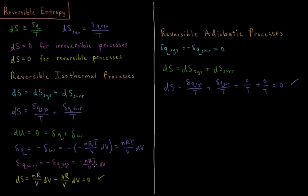In this case, the temperature of the surroundings and the temperature of the system are going to be the same. So dq_sys over T plus dq_surroundings over T is going to be nR over V dV for the system, and then minus nR over V dV for the surroundings, which gives us a total of zero. So for reversible isothermal processes, the entropy change is zero — it is indeed a reversible process from the perspective of the universe.